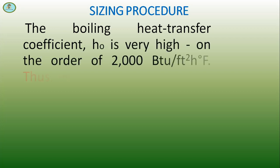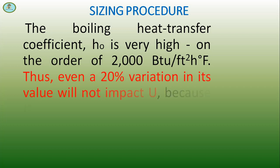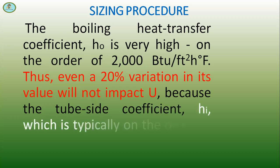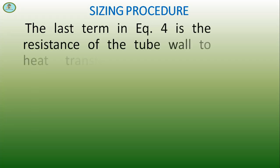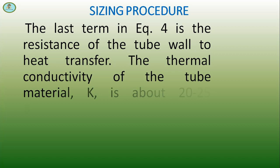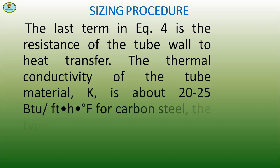The boiling heat transfer coefficient H₀ is very high, on the order of 2000 BTU/ft² hr °F. Thus even a 20% variation in its value will not impact U, because the tube side coefficient Hᵢ, which is typically on the order of 10 to 20 BTU/ft² hr °F, governs U. The last term in equation 4 is the resistance of the tube wall to heat transfer. The thermal conductivity of the tube material K is about 20 to 25 BTU/ft hr °F for carbon steel, the typical material used for boilers.